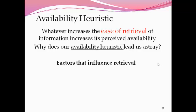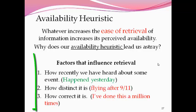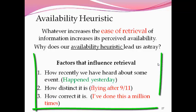What factors influence how information can be retrieved in our memory? Really three factors: how recently we've heard about some event — it happened yesterday, so it's already pretty fresh in memory; how distinctive or unique it is — for example, seeing planes fly into the World Trade Center when you're trying to fly after 9/11; and how correct information is — if you've done something a million times before, you're likely to think that solution will work again in the future.